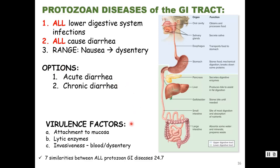The virulence factors that protozoa have vary. Some just attach to the mucosa and change its functioning, causing more secretion of fluid and electrolytes or hampering nutrient absorption. Some make lytic enzymes — lytic means cell death, so it damages cells. Some are invasive, and usually lytic and invasive go together. When there is invasion beneath the mucosa, that's when you get blood in the stool, which is called dysentery — bloody stools.